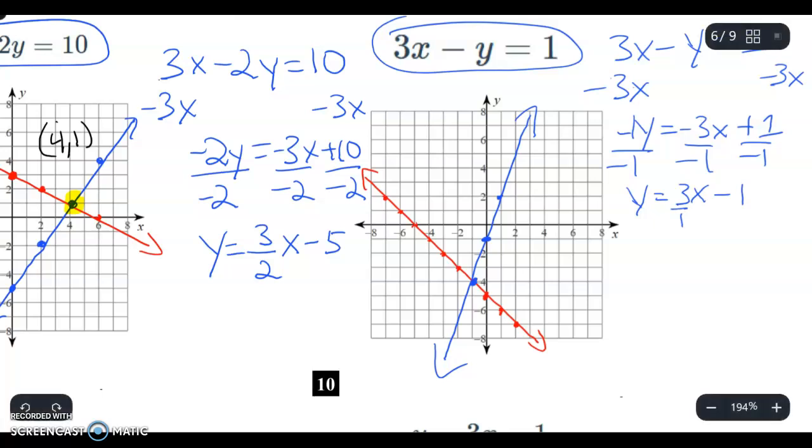And what it crosses at is your answer. So it crosses at negative 1, negative 4 and that's it.